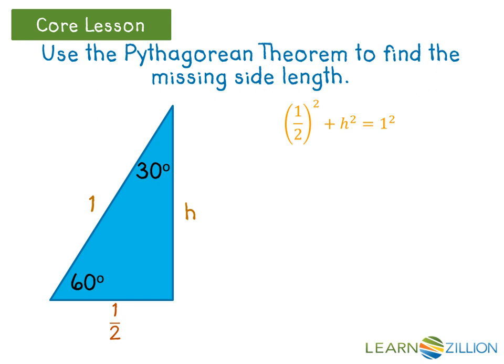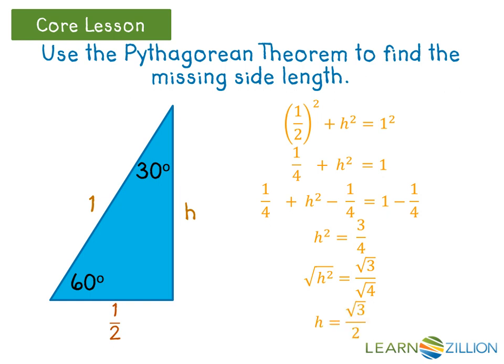When we simplify this equation, we get one-fourth plus h squared equals one. By subtracting one-fourth from both sides, we get h squared equals three-fourths. To get h by itself, we have to take the square root of both sides. When we simplify one final time, we get h equals the square root of three over two.